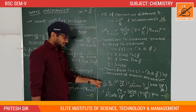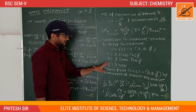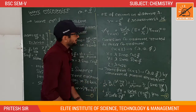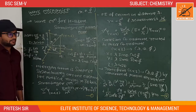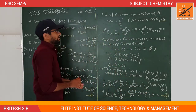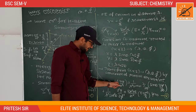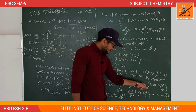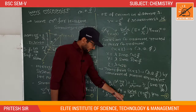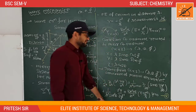This transformation is not a single-step calculation; it contains many mathematical steps, so we directly accept the result. The Schrödinger equation in polar coordinates is: (1/r²)(∂/∂r)(r²·∂ψ/∂r) + (1/r²·sin θ)(∂/∂θ)(sin θ·∂ψ/∂θ) + (1/r²·sin²θ)(∂²ψ/∂φ²) + (8π²μ/h²)(E + e²/r)ψ = 0. This is equation number 2.